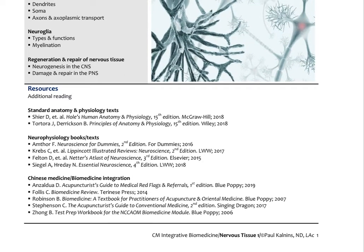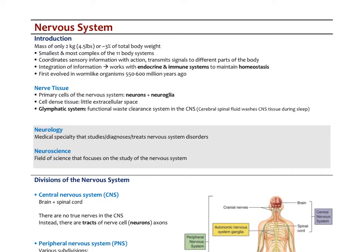Then we'll look at the actual structures of the main cells comprising nervous tissue: the neurons — the actual nerve cells — and then the neuroglia, which are the supporting cells. We'll also say a bit about the regeneration of nerve tissue. The notes are fairly complete, but if you wanted to follow along in any standard anatomy and physiology text, I'd recommend either Hole's or Tortora — you can find older editions at a better cost.